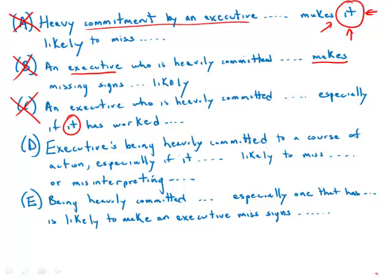Answer choice D: 'executives being heavily committed to a course of action, especially if it...' — here 'it' would refer to 'executives being heavily committed,' not the action itself, which changes the meaning. Furthermore, this is the only sentence with an absolute failure of parallelism between the two verbs: 'likely to miss' (infinitive) and 'misinterpreting' (participle). So D is just a train wreck — D is completely out. We've now eliminated A, B, C, and D.